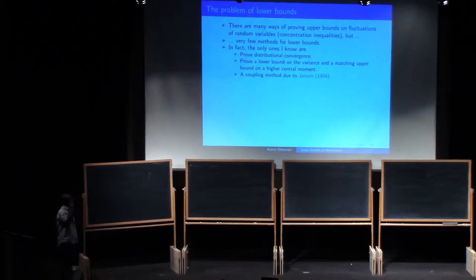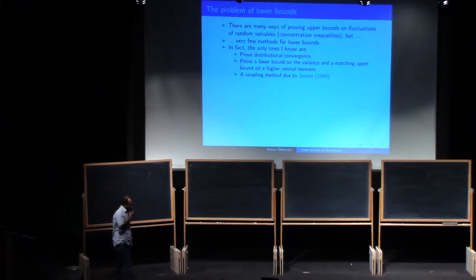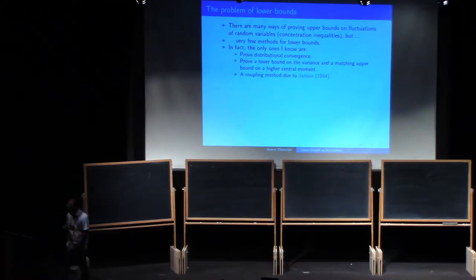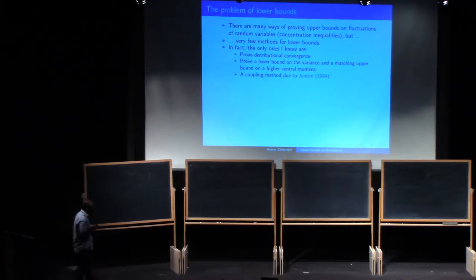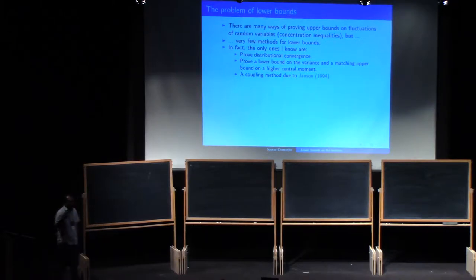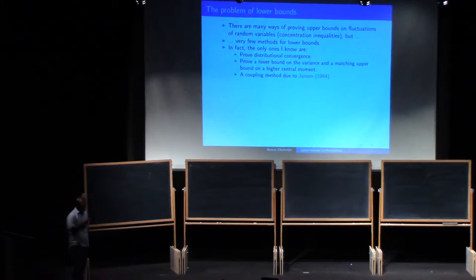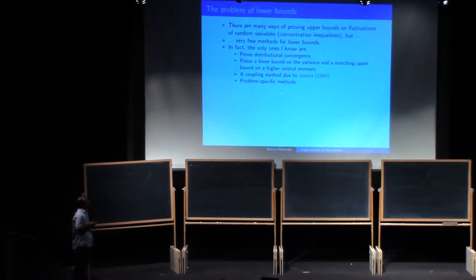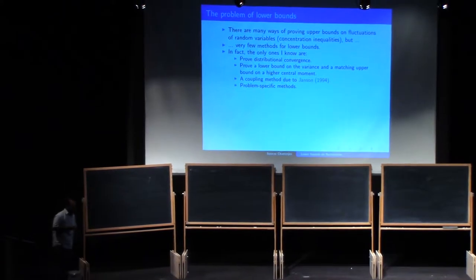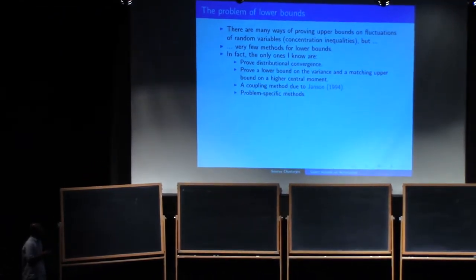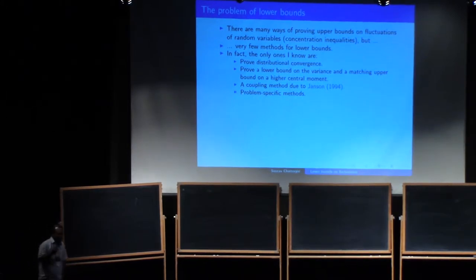There is a coupling method due to Svante Janssen, which I didn't know about. After I wrote my preprint, I sent it to Mike Steele, who told me about it. Janssen has a lemma which he used with Béla Bollobás to prove a lower bound on the fluctuations of the longest increasing subsequence. And then there are problem-specific methods — various papers have been written. You can find a survey of all of these in my preprint, which is on arXiv now.